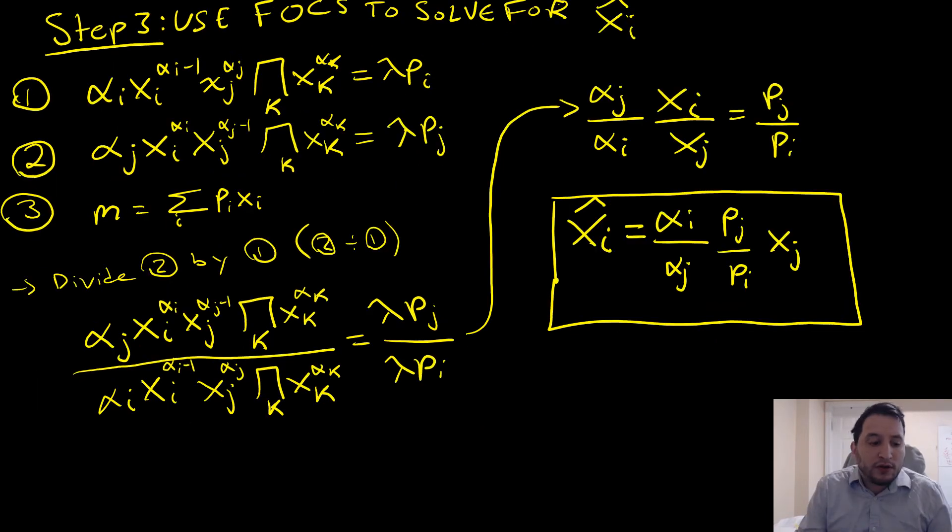For our third step, we're going to use our first order conditions to solve for x_i hat. We're going to divide equation two by equation one. One of the things we should notice right away is that these big terms just get knocked off, as well as these multipliers. This simplifies to this expression above, from which we are able to obtain our intermediate bundle.